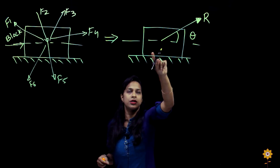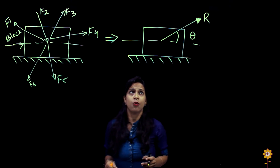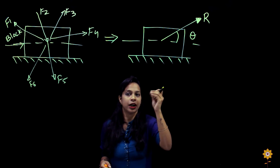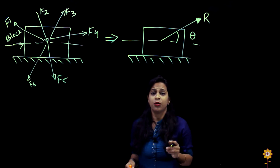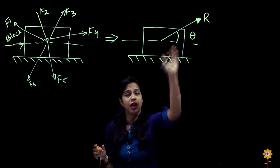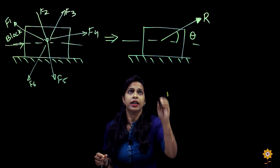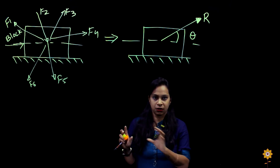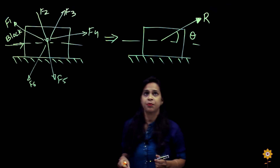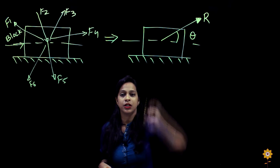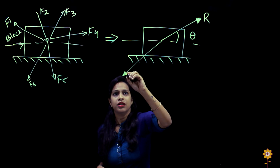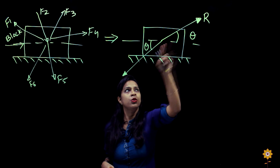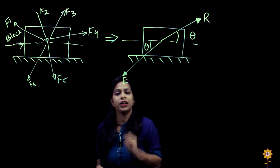We assume that the resultant of all the forces is going upward at an angle of theta with the x-axis. Because of this resultant force, the block may move forward if it is under rest, or if it is under uniform motion, the velocity may change. The object will be unbalanced, so what we do is apply an equal and opposite force to the resultant — at the same angle theta but directly in the opposite direction — and this force we call the equilibrium force.